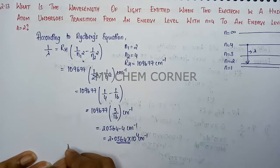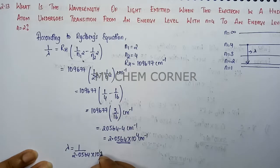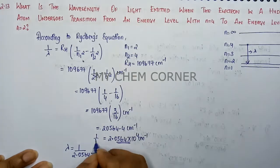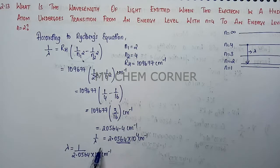We need the λ value, therefore λ is 1 divided by 2.0564×10⁴ cm⁻¹. Because this value is for 1/λ, that is the value we took it for. We will find what is λ value. This will become 1 divided by this value.